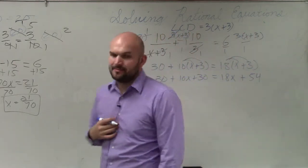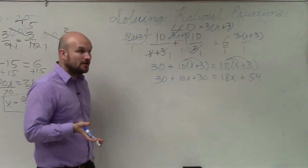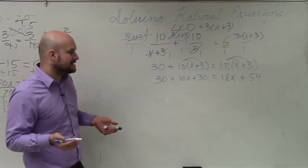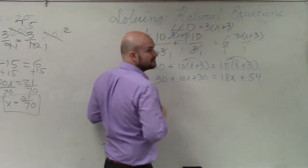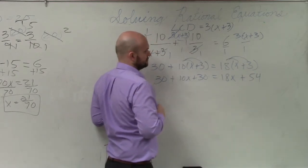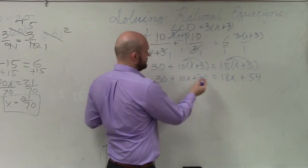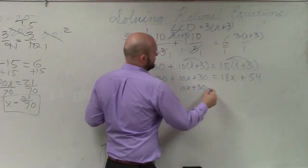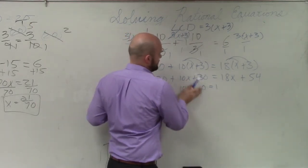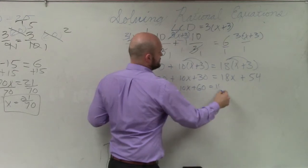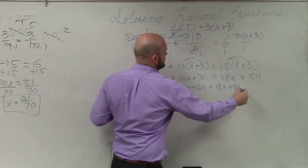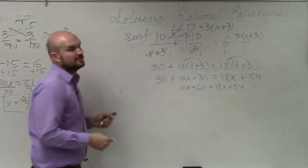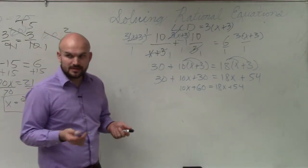So I have 30 plus 10x plus 30 equals 18x plus 54. Now on our last example, now what we need to do is solve for x. So we've got to get the x's to the same side. Before we do that, can I just combine the already the same? Sure. 30 plus 30 is 60, right? Yes. So 10x plus 60 equals 18x plus 54.